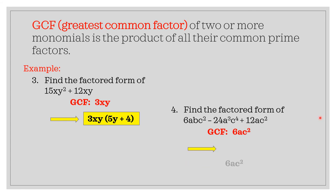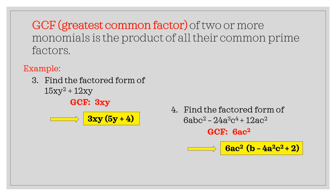The factored form is 6ac squared times the remaining factor. Dividing 6abc squared by 6ac squared gives b. Copy the negative sign. Dividing 24a cubed c to the 4th by 6ac squared: 24 divided by 6 is 4, a cubed divided by a is a squared, and c to the 4th divided by c squared is c squared — giving 4a squared c squared. Copy the positive sign. Dividing 12ac squared by 6ac squared gives 2. Therefore, the factored form is 6ac squared times (b minus 4a squared c squared plus 2).